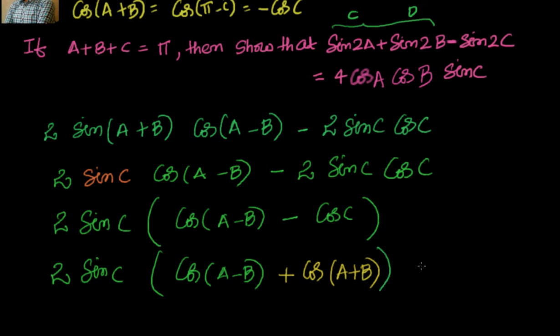This is nothing but equal to... Now you can simplify this, cos a cos b plus sin a sin b plus cos a cos b minus sin a sin b. So the sine terms cancel out, you will have 2 cos a cos b. 2 into 2 is 4. Then you will have 4 cos a cos b sin c.